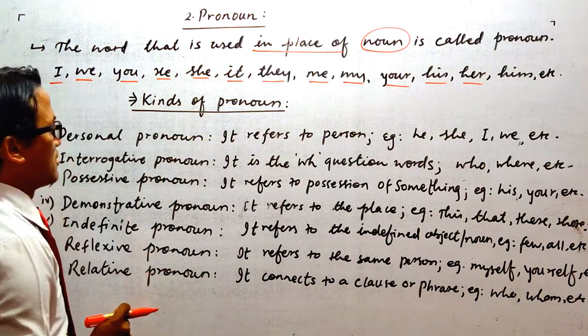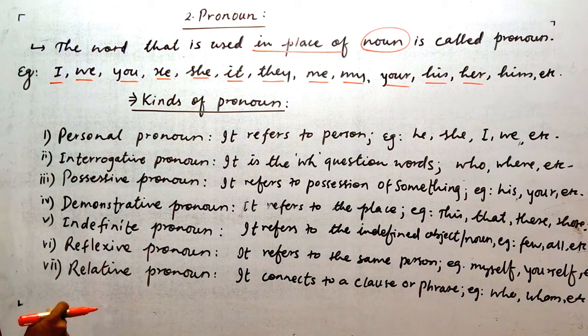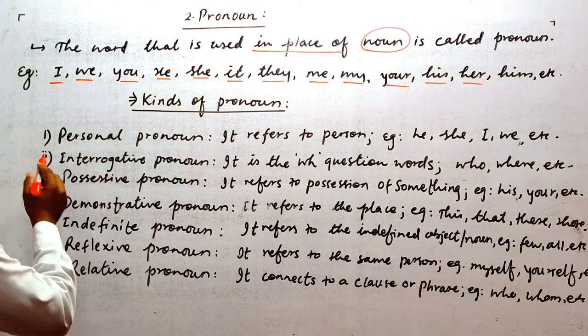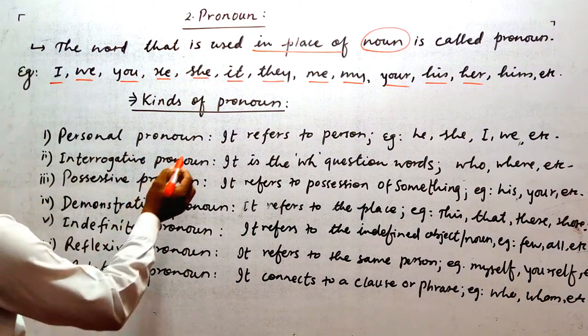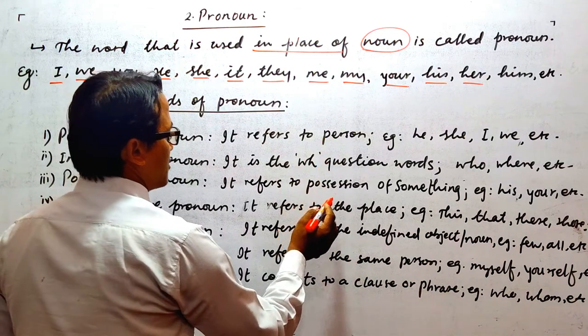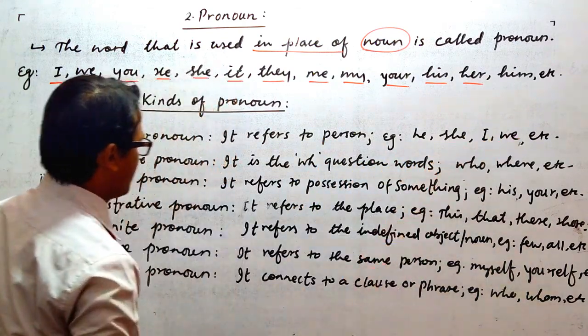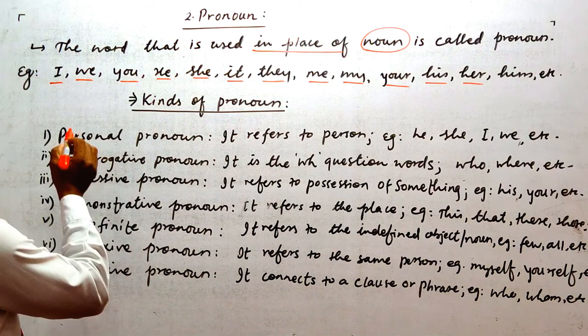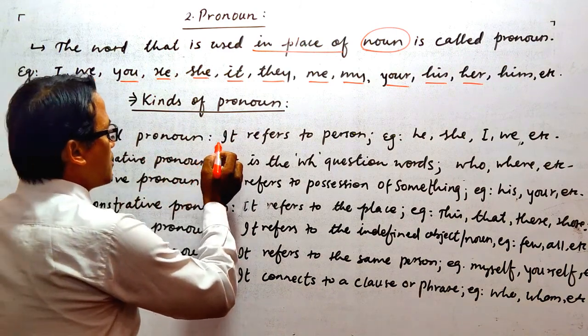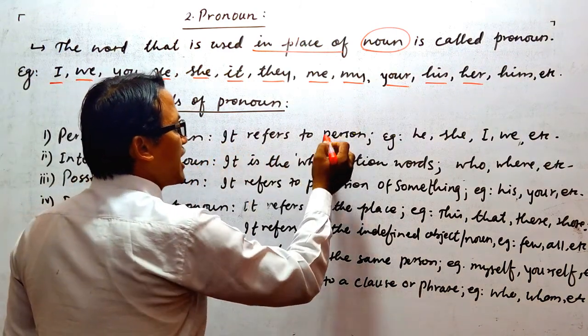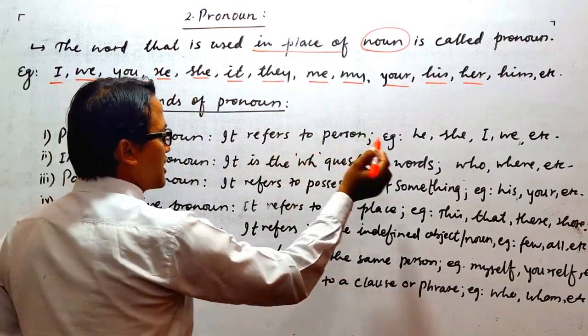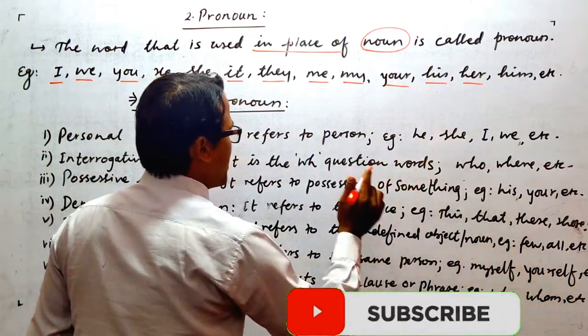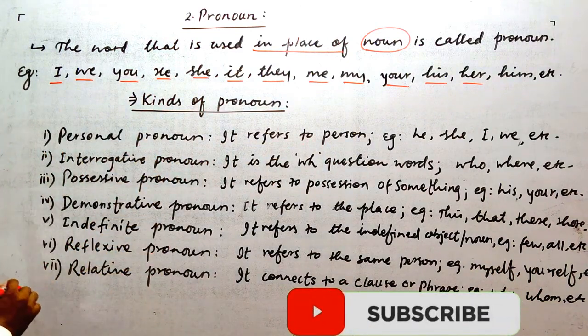Kinds of pronoun. One, Personal pronoun. It refers to person. Example: he, she, I, we, etc.